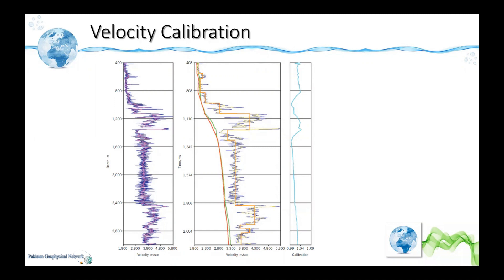We can calibrate seismic velocities using well velocities. Here we have a sonic log as a function of depth; we apply a moving average and get an average function shown in pink, meaning high frequencies have been removed. Using the velocities within the sonic log, we convert to the time domain and compute a block average of velocity for each interval. The orange curve shows the interval velocity — the average velocity for each layer.